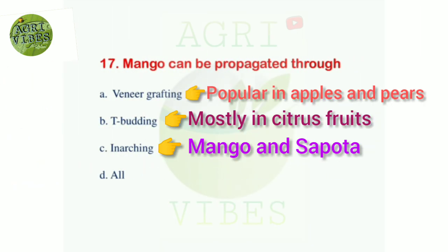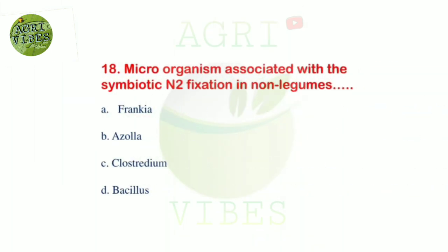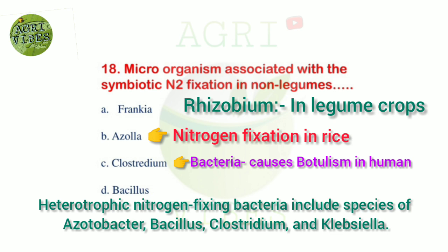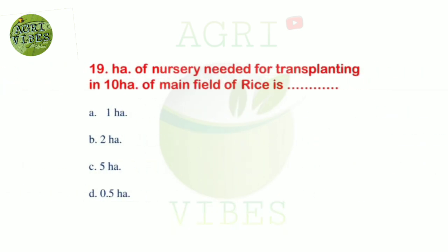Next question: mango can be propagated through — options: veneer grafting, T-budding, arching, and all of the above. Correct answer is all of the above — by all these methods, mango can be propagated. Next question: microorganism associated with symbiotic nitrogen fixation in non-legumes — options: Frankia, Azolla, Clostridium, and Bacillus. Correct answer is option A, Frankia.